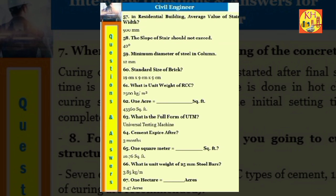Question 57: In residential building average value of stair width: 900 millimeters. Question 58: The slope of stair should not exceed 40. Question 59: Minimum diameter of steel in column: 12 millimeters. Question 60: Standard size of brick: 19 centimeters by 9 centimeters by 9 centimeters. Question 61: What is unit weight of RCC? 2,500 kilograms per cubic meter. Question 62: 1 acre equals 43,560 square feet. Question 63: What is the full form of UTM? Universal testing machine. Question 64: Cement expire after 3 months. Question 65: 1 square meter equals 10.76 square feet. Question 66: What is unit weight of 25 millimeters steel bars? 3.85 kilograms per meter.